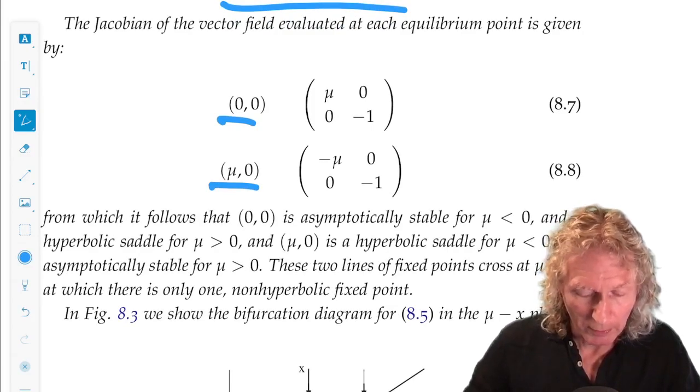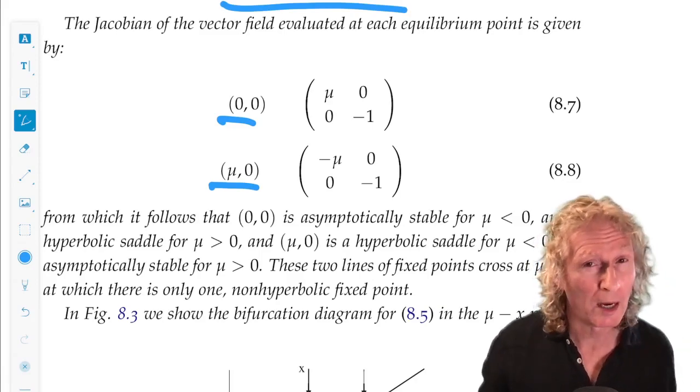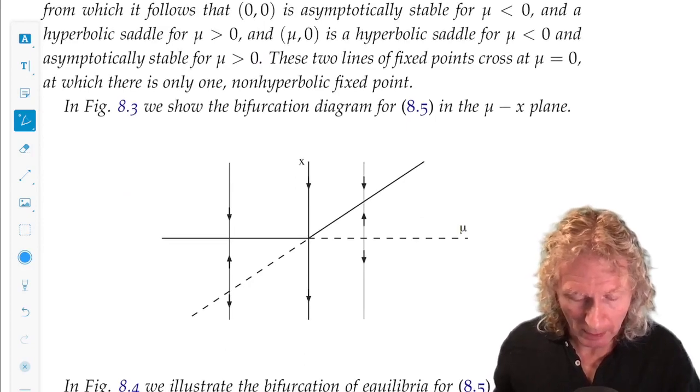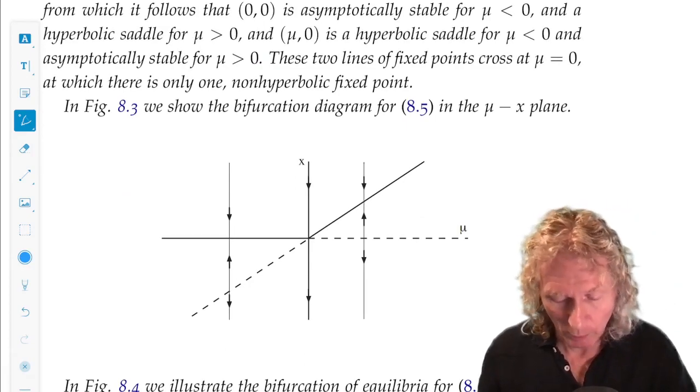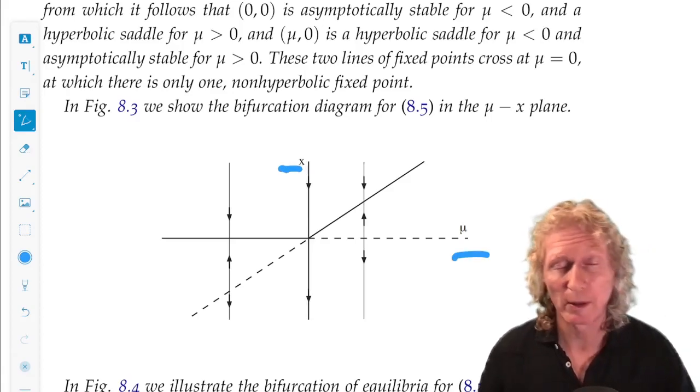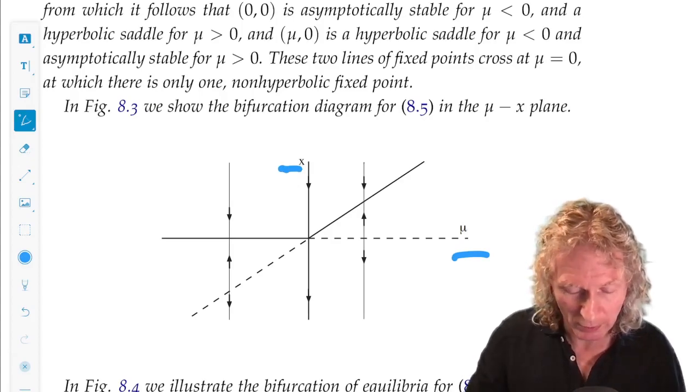And (mu,0) is for mu negative, it's a saddle. For mu positive, it's a sink. So the opposite instability. So if we plot out the bifurcation diagram, mu horizontally, and the relevant phase-based variable that captures the bifurcation, in this simple example there's no question about it.